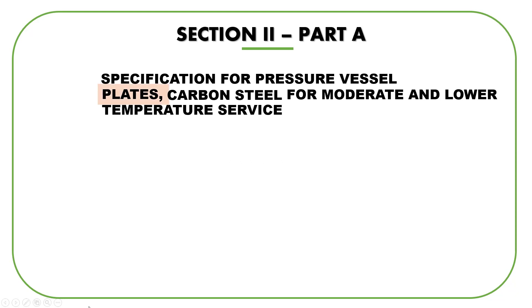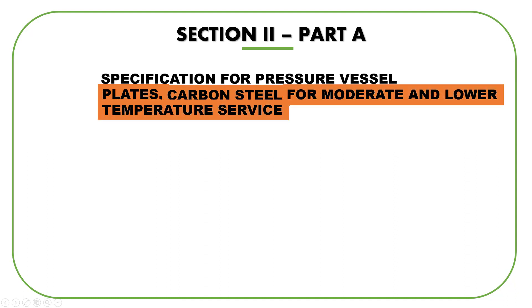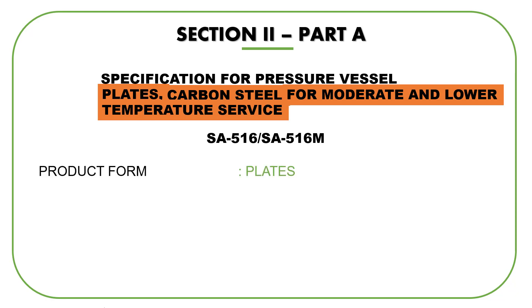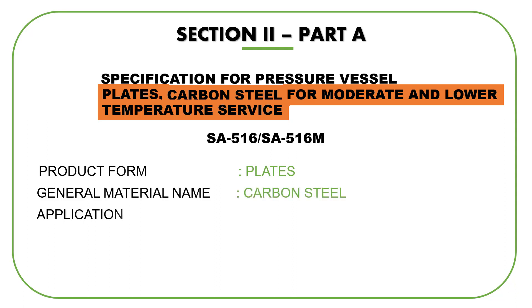Hope you have the code opened in front of you. When you open a typical title of SA 516, it gives specifications to be used for pressure vessel plates made of carbon steel, to be used for moderate and low temperature services. As we see a typical title of a specification, it indicates the type of product form, general material name, application, and applicability. So much information in just the title of the specification — isn't it great?